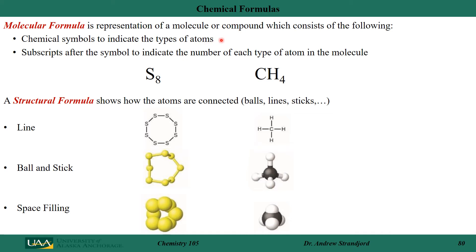A molecular formula lists the chemical symbol for each type of atom and how many of those atoms are in the molecule. For example, S represents sulfur, and S₈ indicates there are eight sulfur atoms connected together. In methane, I have C for carbon, H for hydrogen, and four hydrogens — that's my molecular formula.